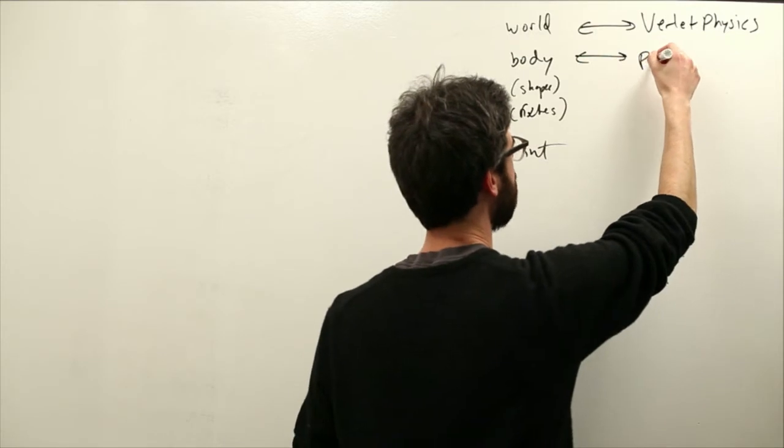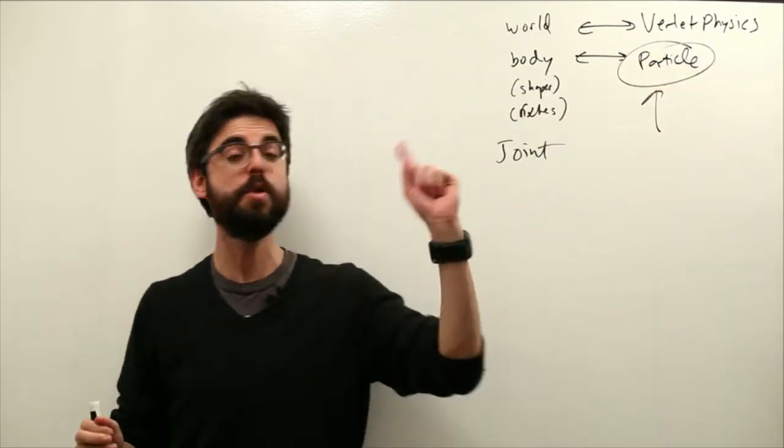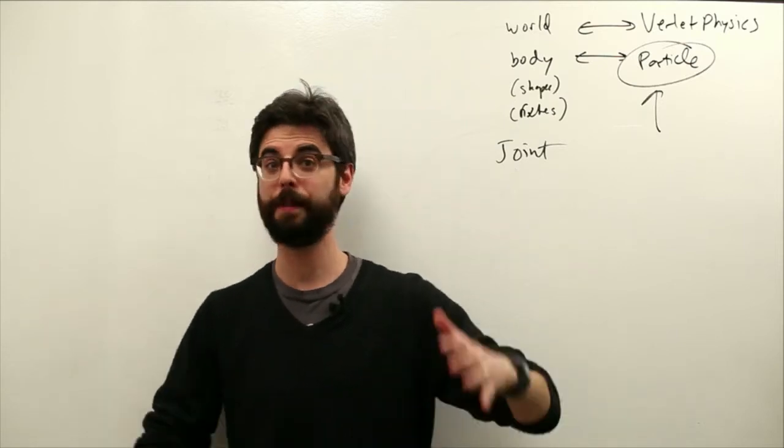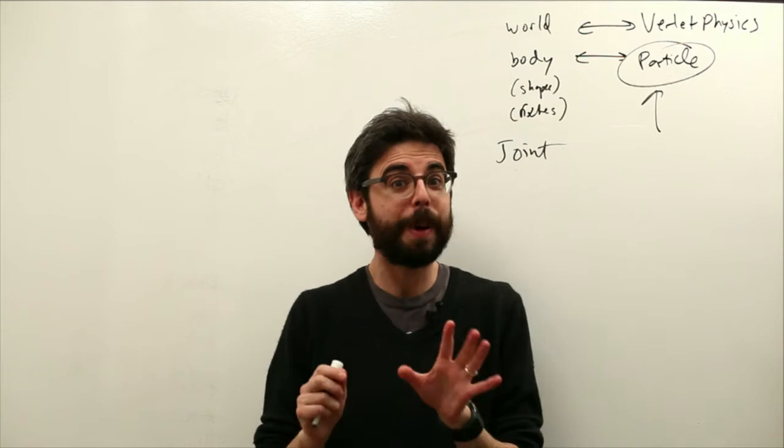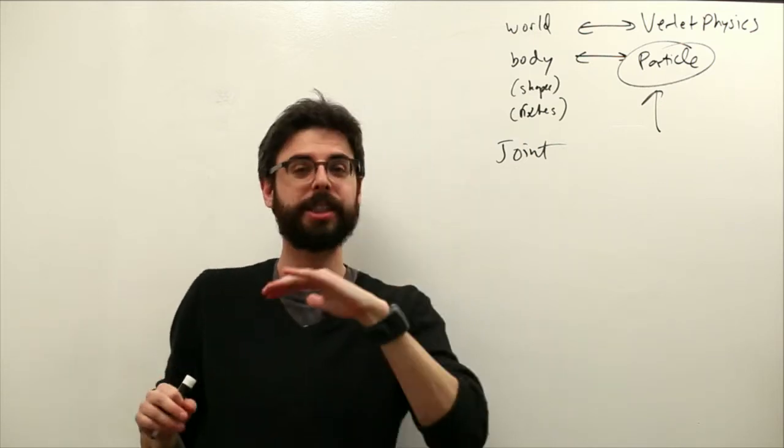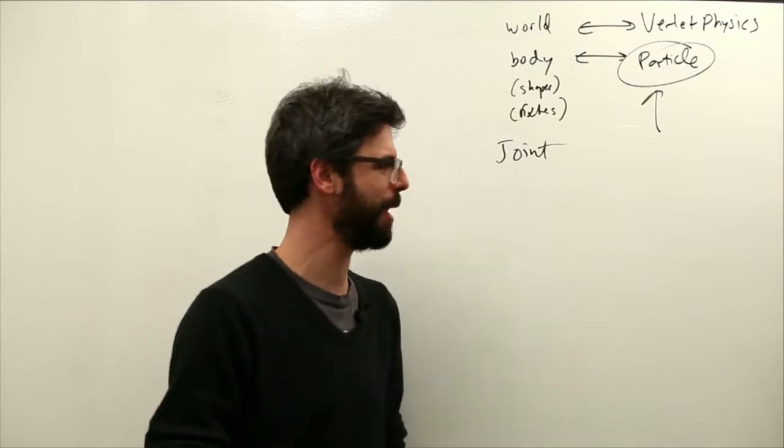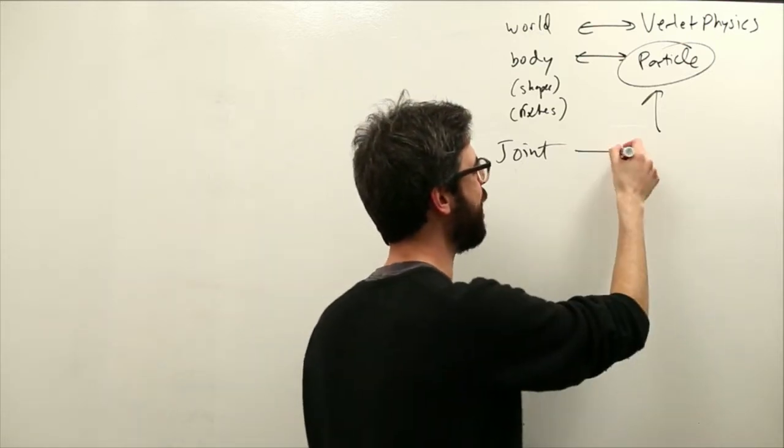A body is a particle. So a particle is the thing that's going to move around the Verlet physics world. We're gonna make a world, we're gonna put particles in it, and watch those particles move about. Particles, by the way, can have those behaviors, they can be attractive or repulsive, which is something very exciting that we're gonna see a few examples from now.